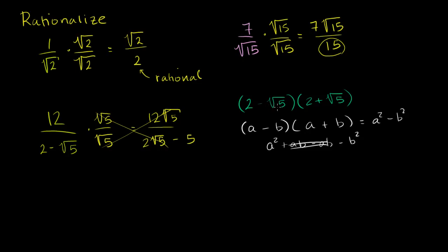So 2 minus the square root of 5 times 2 plus the square root of 5 is going to be equal to 2 squared minus square root of 5 squared, which is 4 minus 5, or negative 1. So if you take advantage of the difference of squares of binomials, then you can rationalize this denominator.